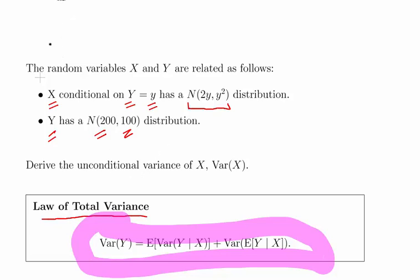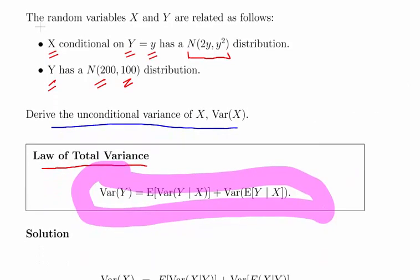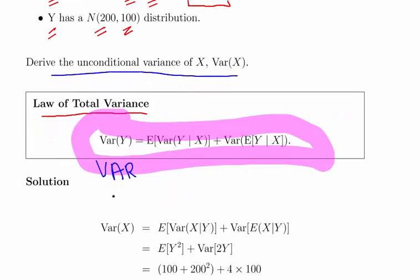The question is: derive the unconditional variance of X, Var(X). We're just rewriting this formula by flipping the positions of X and Y, because we're dealing in terms of X conditional on Y.